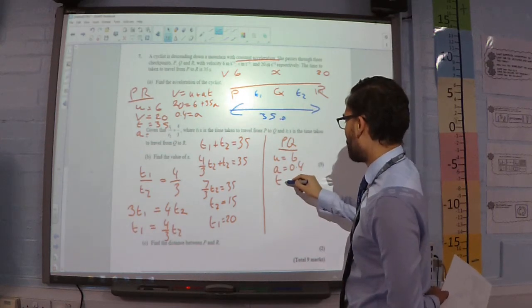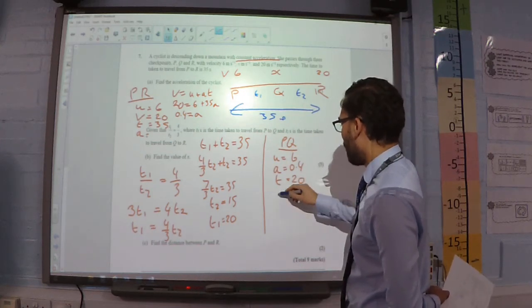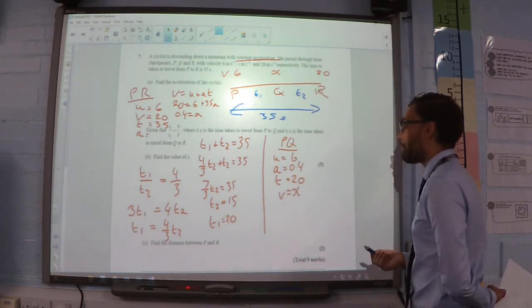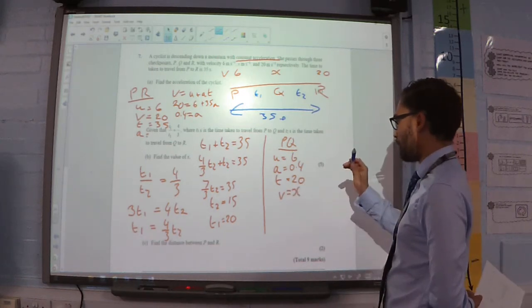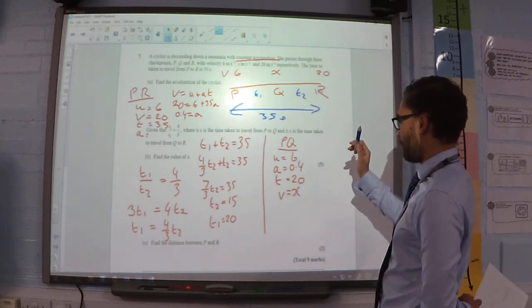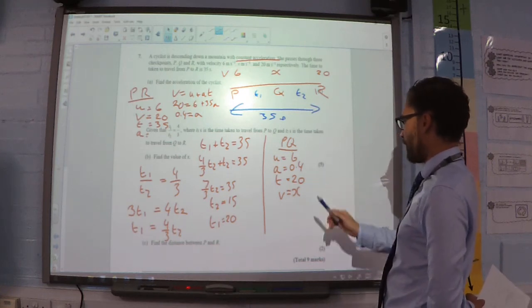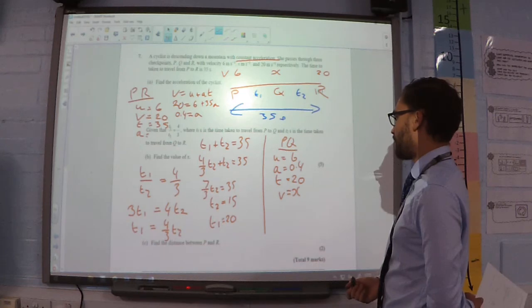And, my final velocity is some unknown X. So, V equals U plus AT.